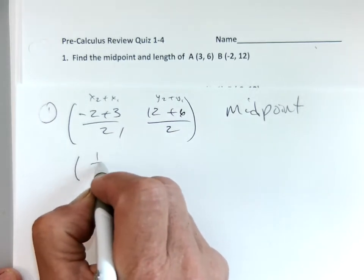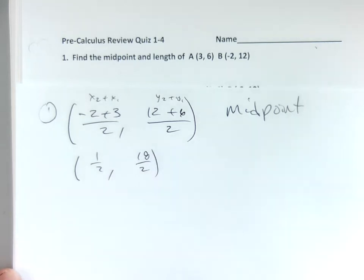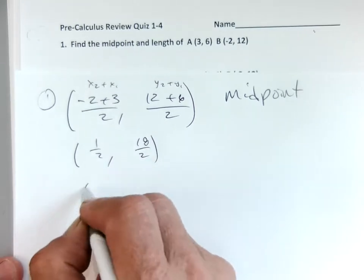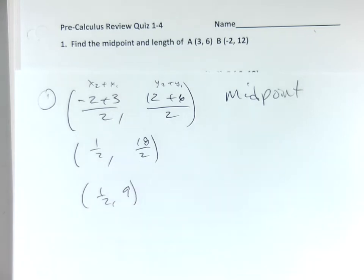So that will simplify to 1 over 2, 18 over 2, which is 1 half 9. Please tell me to slow down if I get going too fast. Will you tell me that? I don't mean to go fast.